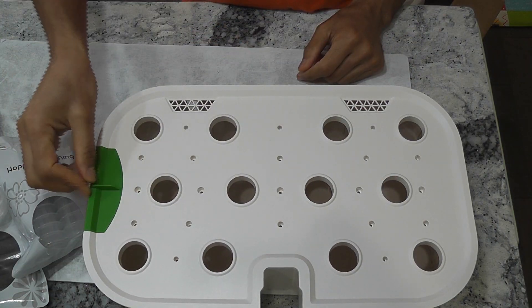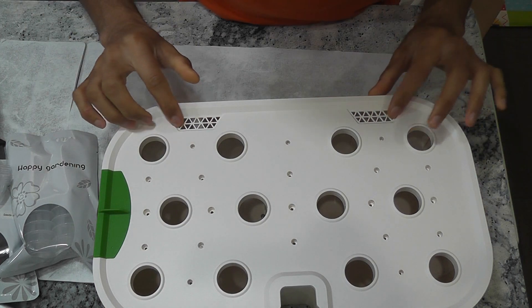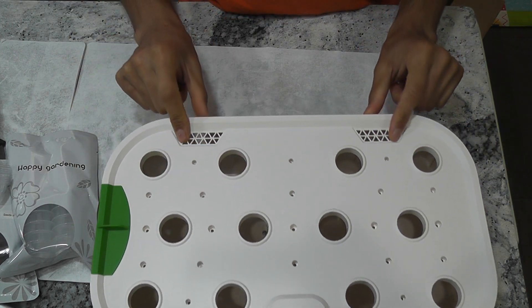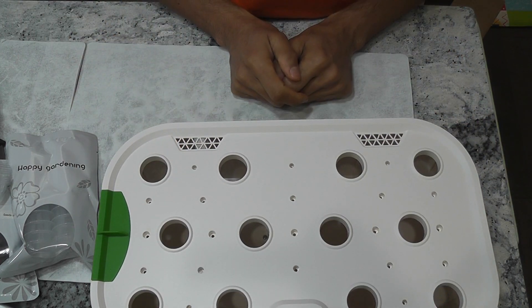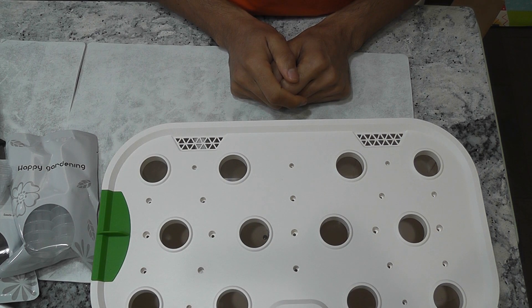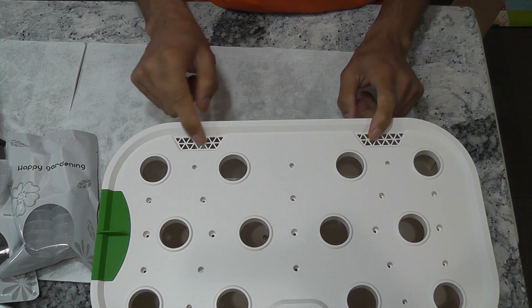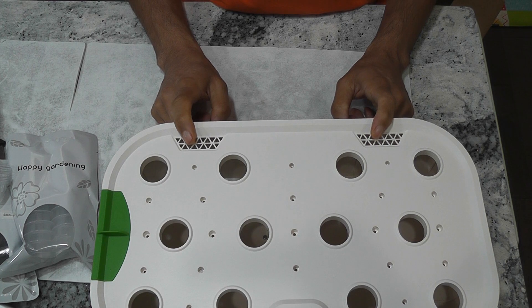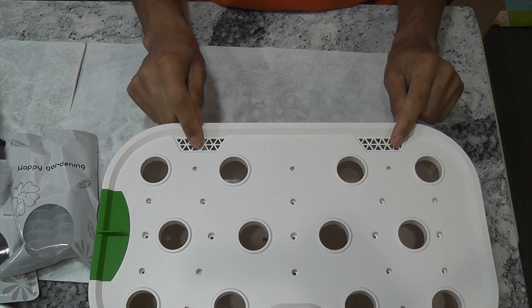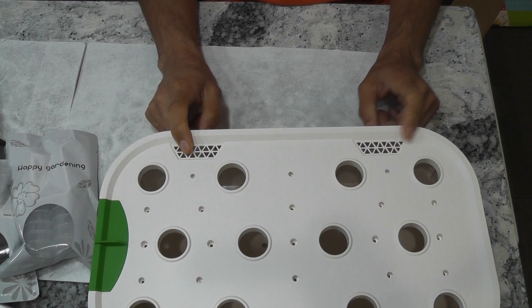Here is the bowl setup. I just noticed these two vents on this grow deck. I don't know the purpose of these vents but I don't like this kind of opening at all. I don't want the light going into the water. So I am going to seal these vents using some tape.